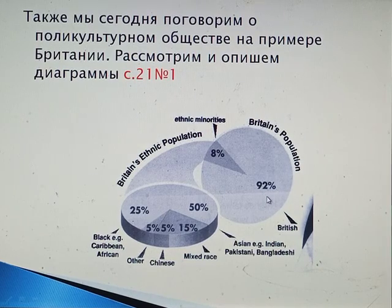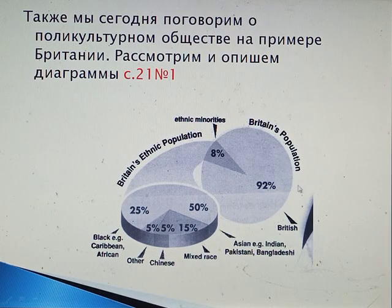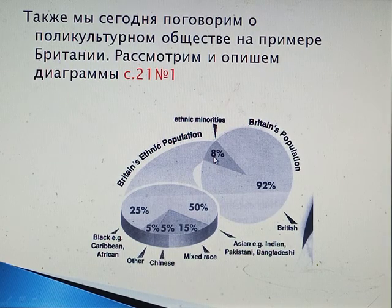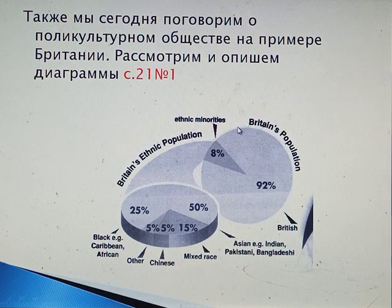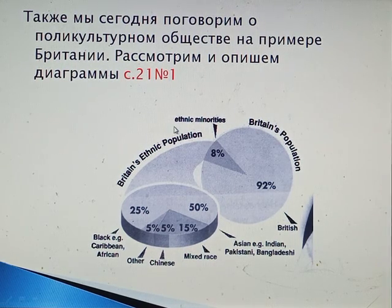92% of British population are British, but 8% are ethnic minorities. What nationalities do these ethnic minorities include?